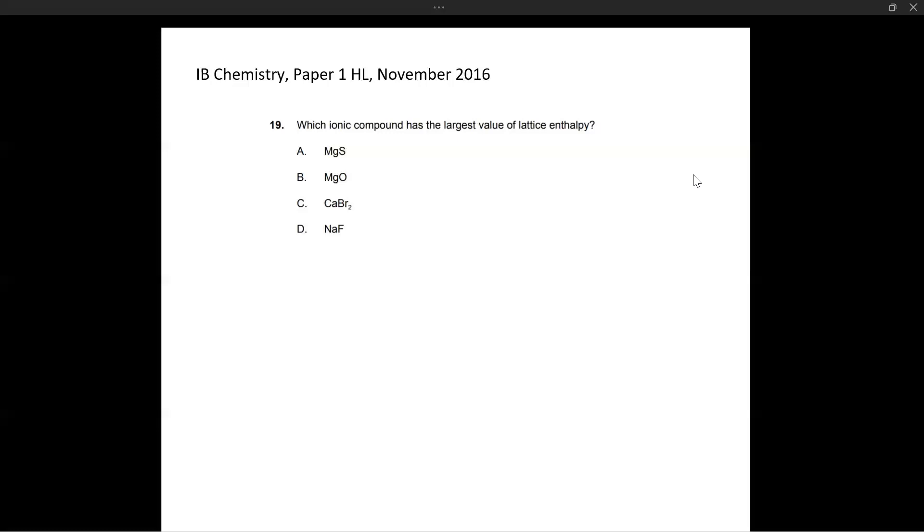In this video, we're going to strictly talk about what impacts lattice enthalpy in an ionic compound, which is what this question also asks us to determine. They've asked us, which ionic compound has the largest value of lattice enthalpy? We have four options: MgS, MgO, CaBr2, and NaF.